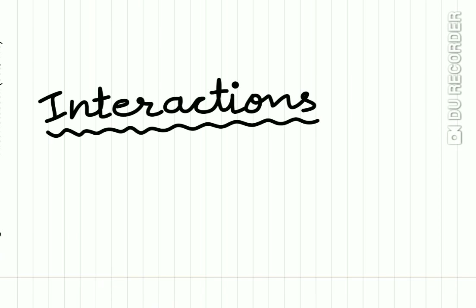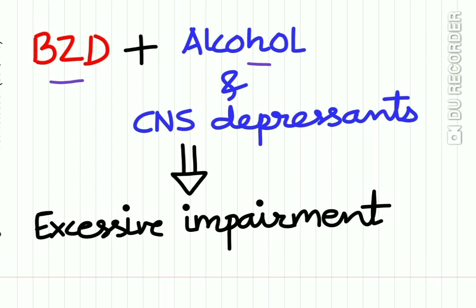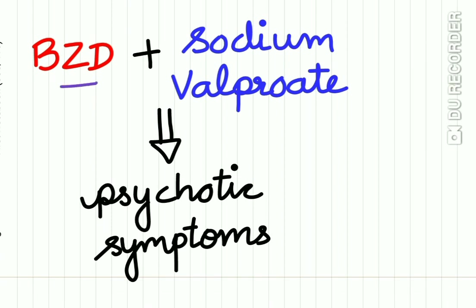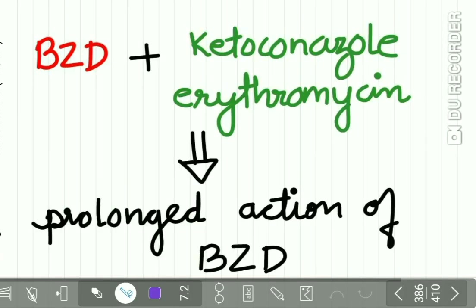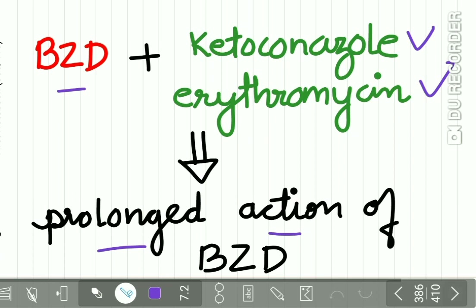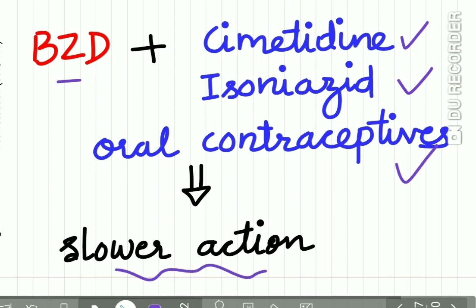Regarding drug interactions: benzodiazepines interact with alcohol and other CNS depressants causing excessive impairment — there is synergism. They may interact with sodium valproate and induce psychotic symptoms. Benzodiazepines react with ketoconazole and erythromycin, giving a prolonged action of benzodiazepine. They interact with cimetidine, isoniazid, and oral contraceptives, resulting in a slower metabolism and thus slower action of benzodiazepines.